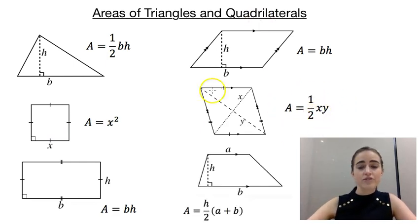And the last quadrilateral to look at is a trapezium. So if we know the lengths of the parallel sides, and we know the perpendicular distance between those parallel sides, then we can find the area by going h over 2 outside of a plus b.